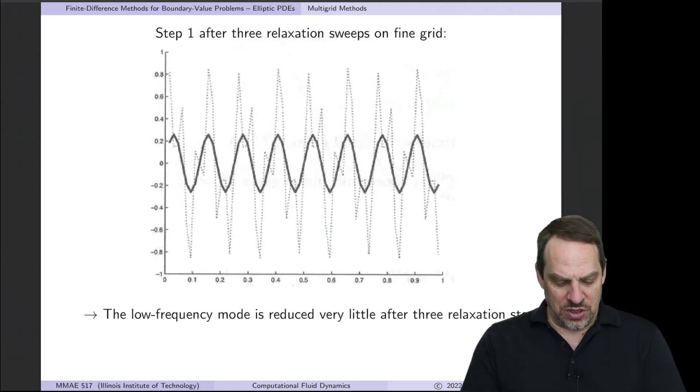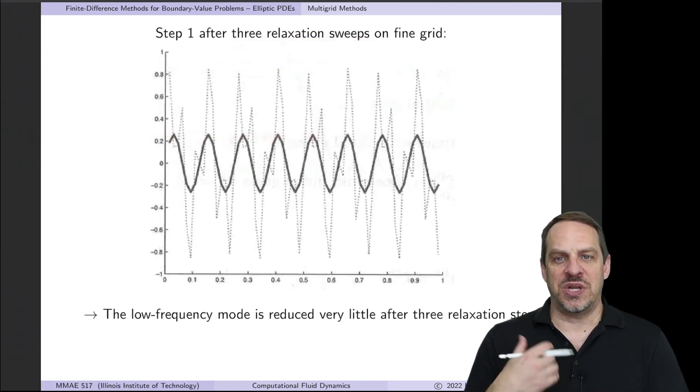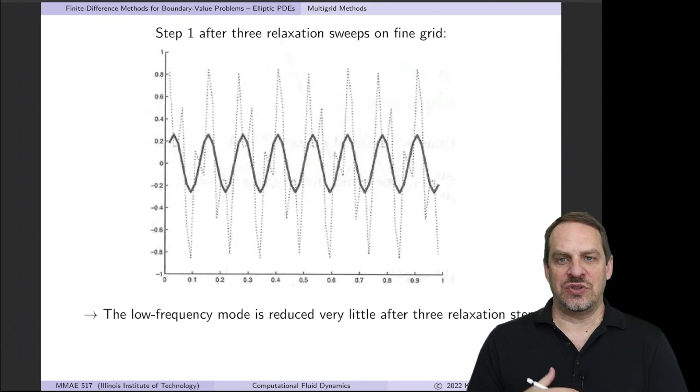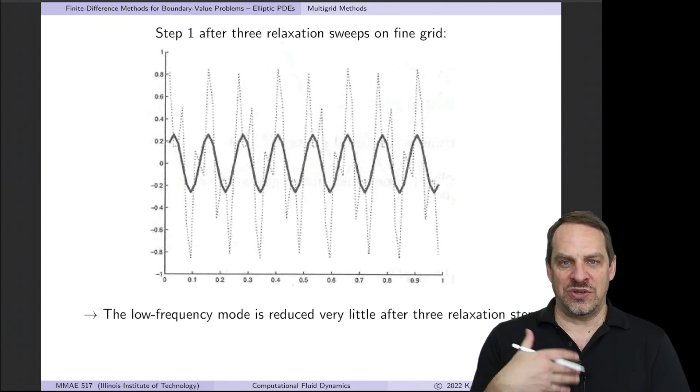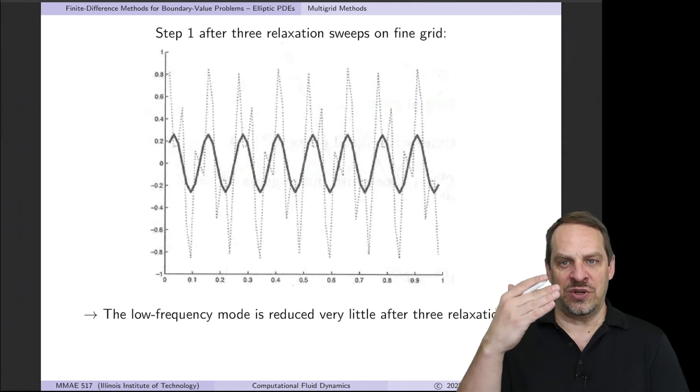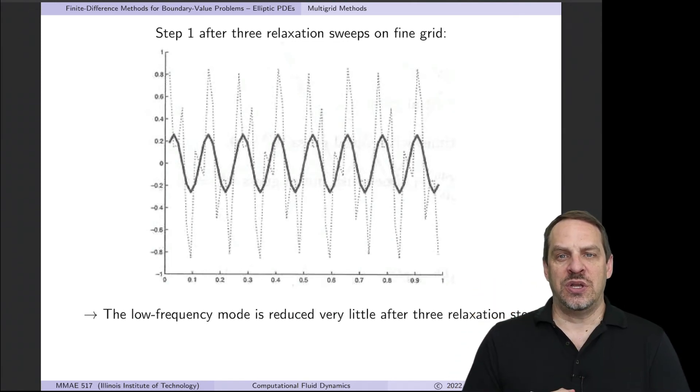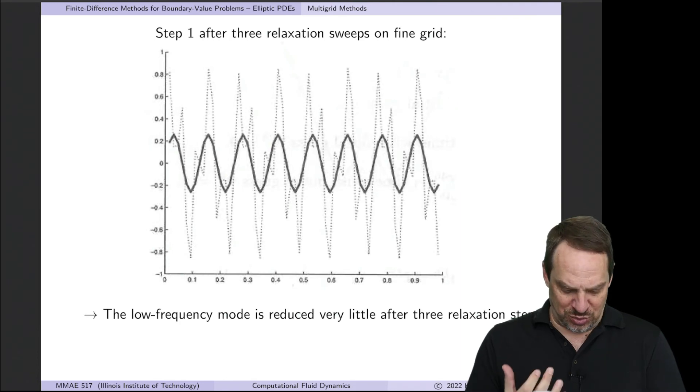And the reason why the error has been reduced so dramatically is because it's those high frequency modes that k=40 modes that you can see are almost completely eliminated. And we only have the lower frequency mode left. After three relaxation sweeps, so two additional sweeps, you can see that the error has been reduced a bit more, but not nearly as much as in that first iteration.